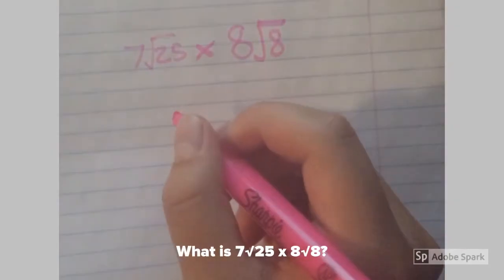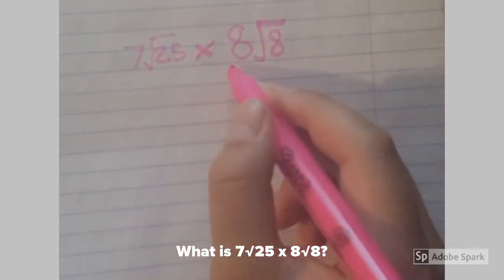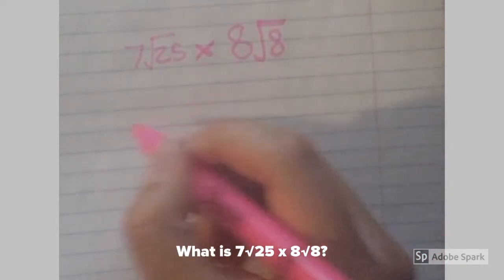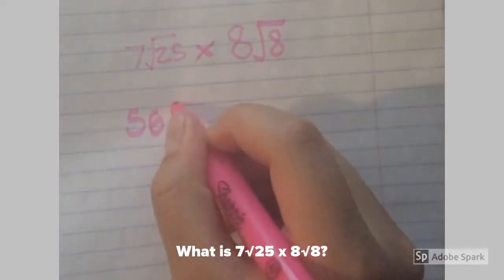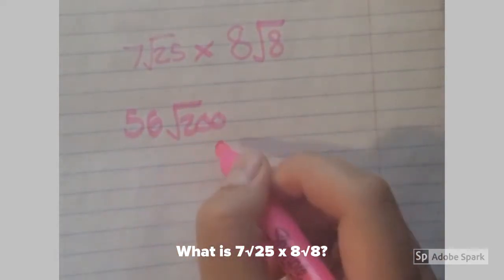Our next problem asks, what is 7 radical 25 times 8 radical 8? So first, we'll multiply 7 and 8, and that equals 56. And then we'll multiply 25 and 8, and that equals 200. So we have 56 radical 200.